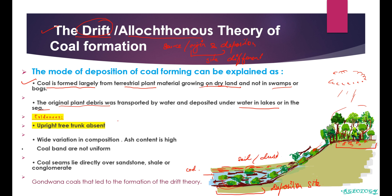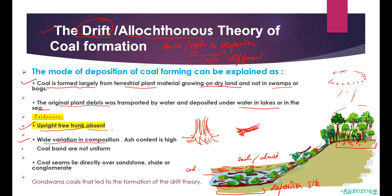There are evidences to identify whether coal seams belong to drift theory or in-situ theory. The first evidence for drift theory is that upright tree trunks are absent — this is a very important distinguishing feature. In in-situ theory the trees are upright in their original position, while in drift theory the tree trunks are inclined or horizontal due to transportation over long distances. There are also no remnant roots, because the trees were not attached to the local soil.